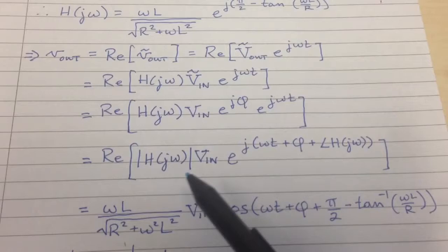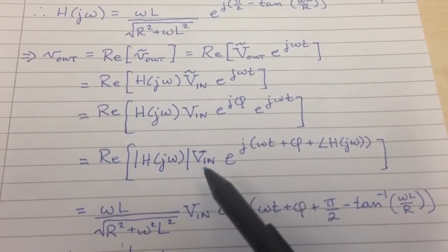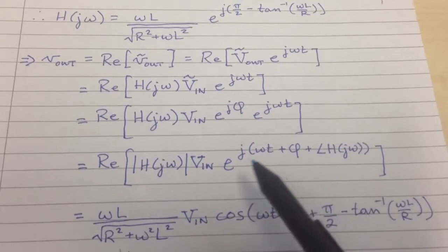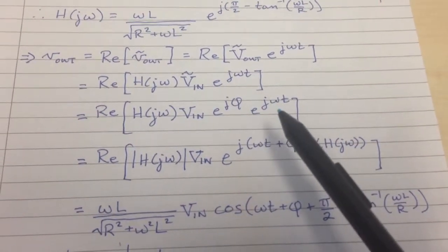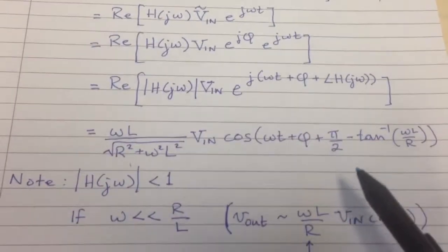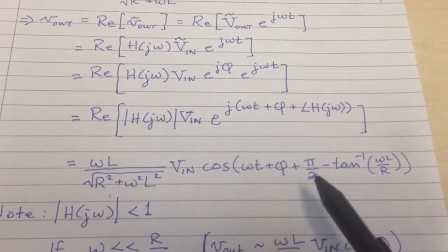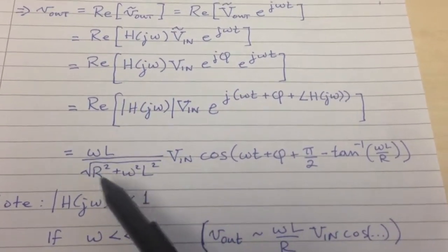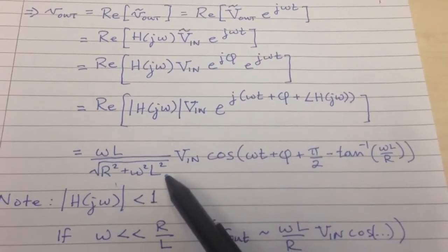And then we're going to get an amplitude, which is going to be the |H(jω)| times V_in, and we're going to get this whole nasty thing in the phase, which is basically the ωt from there, the φ, and then the argument of H(jω), which we just derived to be π over 2 minus the arctangent of ωL over R. And over here, we have that magnitude that we derived above.